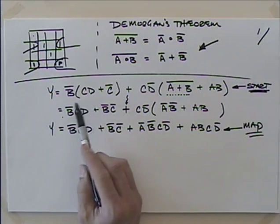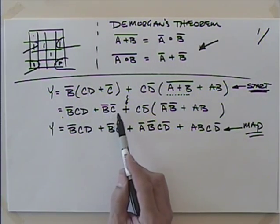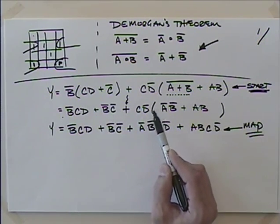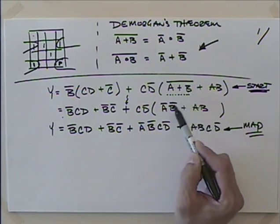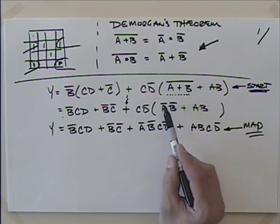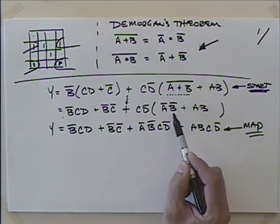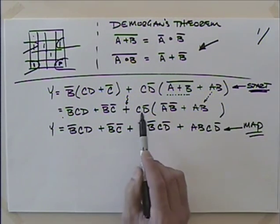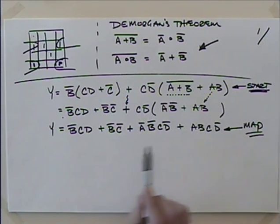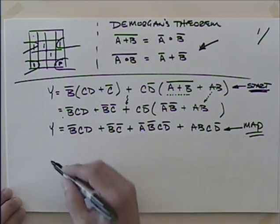Starting with this expression, I factored not-B through and came up with that. Then I used DeMorgan's theorem — inverting A or B gave me not-A and not-B. I simply repeated that term, then factored C not-D through and came up with the result. That was a minterm expression, and I think we can go to a Karnaugh map on that. So let's do that.